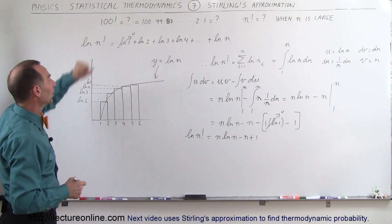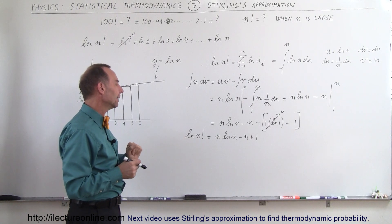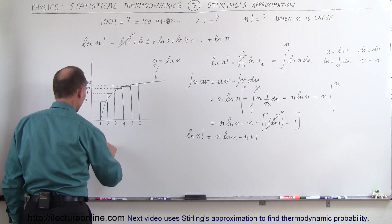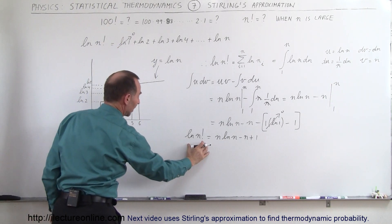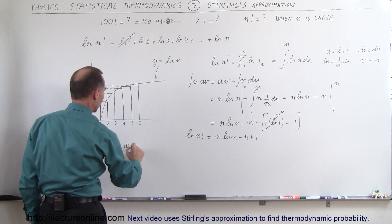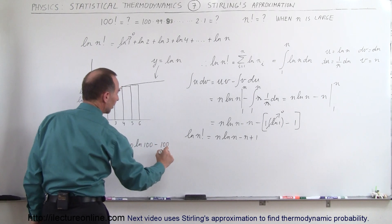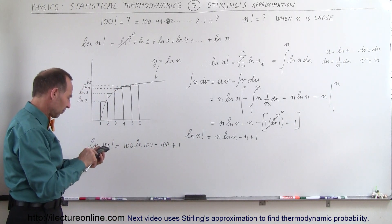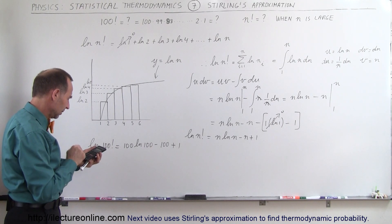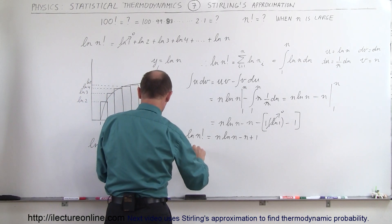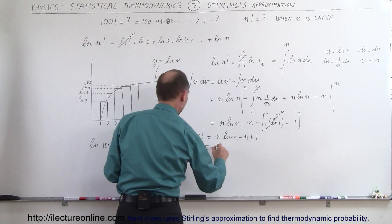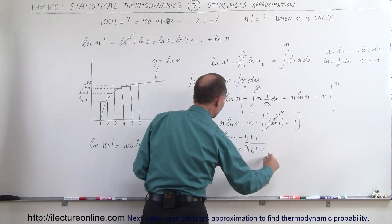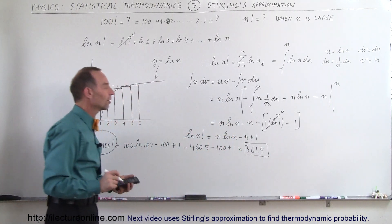So what if we want to take 100 factorial? We need to take the anti-log, so first we find the natural log of 100 factorial using our formula: that's 100 times the natural log of 100 minus 100 plus 1. The natural log of 100 is 4.605, times 100 gives 460.5, minus 100 plus 1 equals 361.5. So we've established that the natural log of 100 factorial is equal to 361.5.